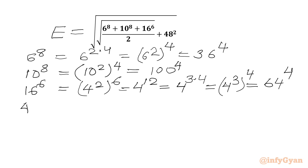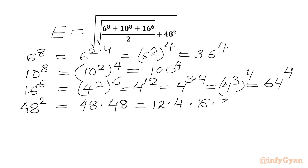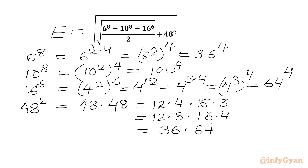Now for 48 squared. This is equal to 48 times 48. The first 48 I can factor as 12 times 4, and the second 48 I can factor as 16 times 3. This gives us 12 times 4 times 16 times 3, which equals 36 times 64. So in place of 48 squared we will write 36 times 64.